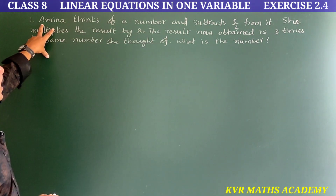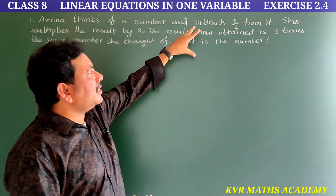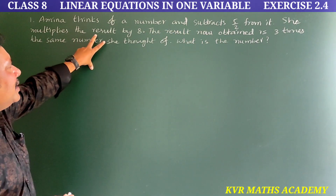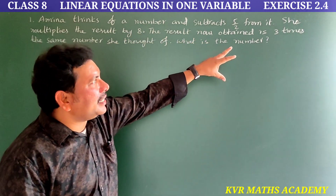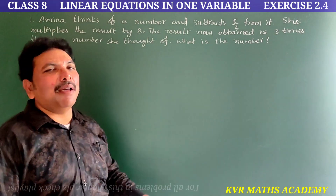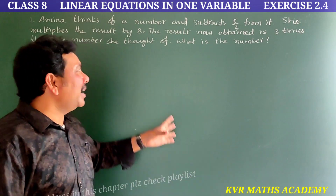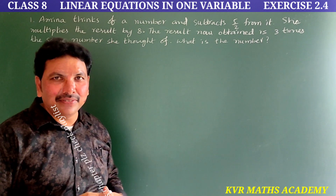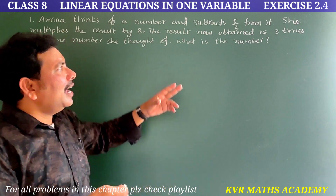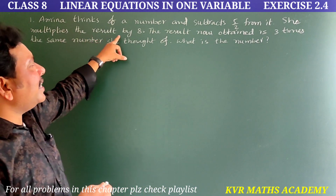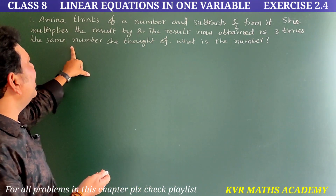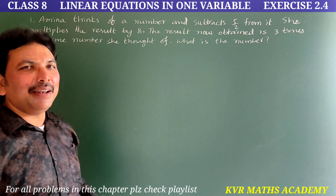This is the first question. Amina thinks of a number and subtracts 5/2 from it. She multiplies the result by 8. The result now obtained is 3 times the same number she thought of. What is the number?